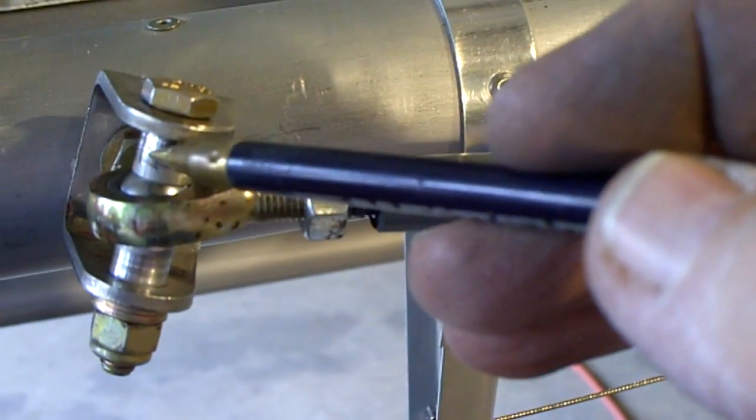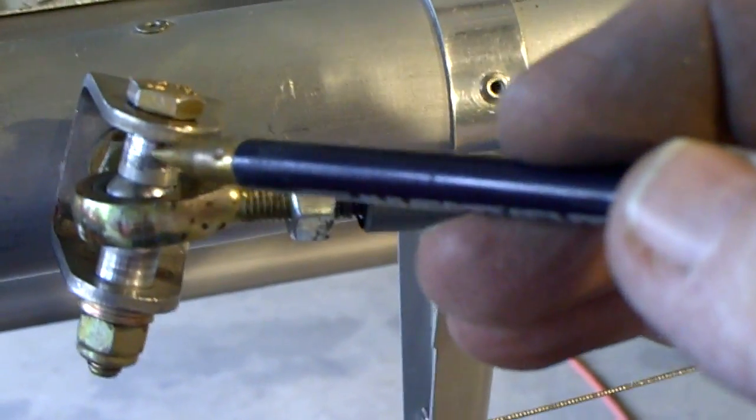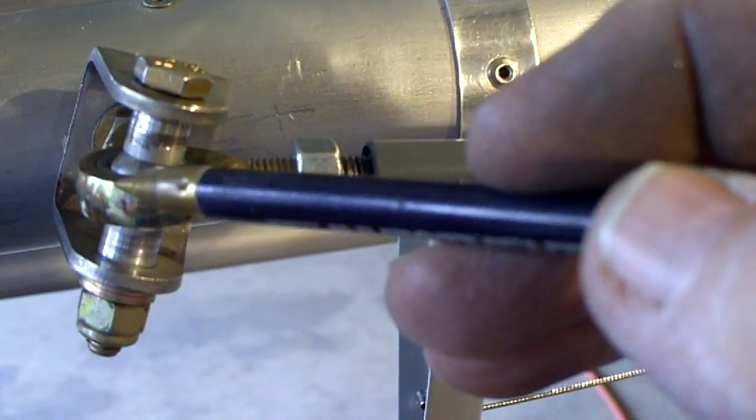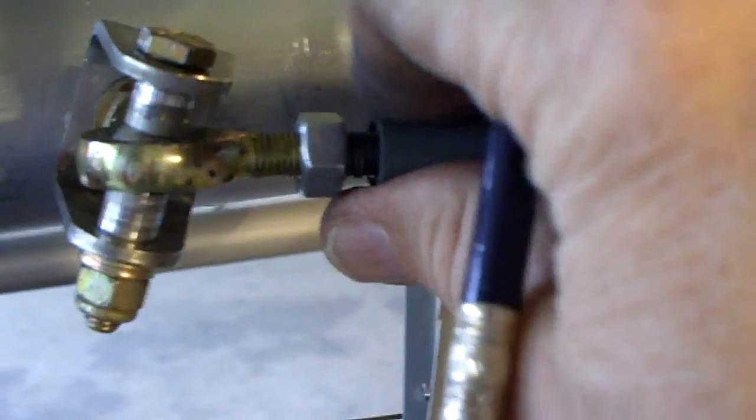You've got two inserts that go in here, and you may have to drill those out. One on either side of the ball rod end fitting.